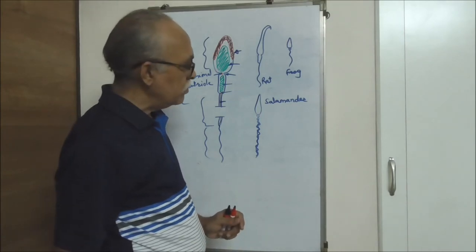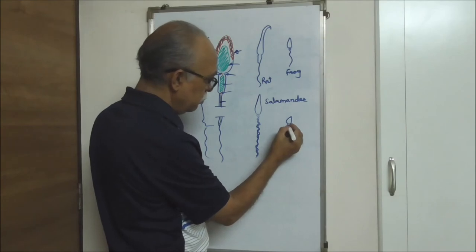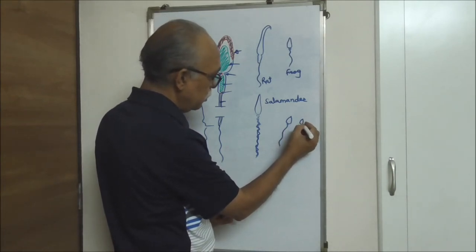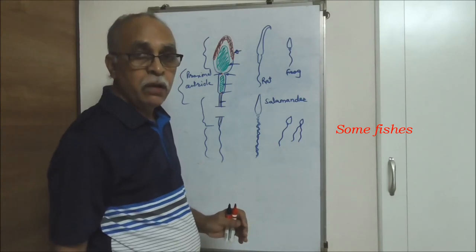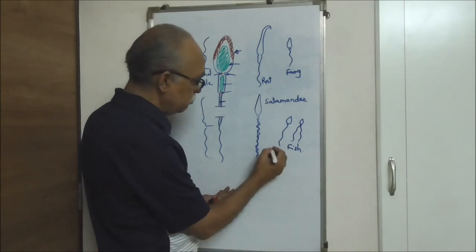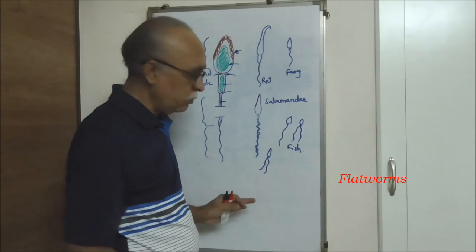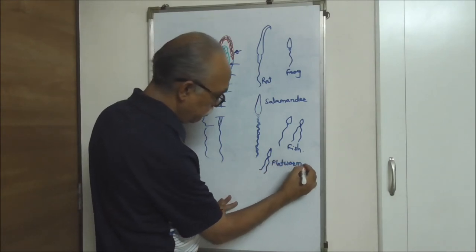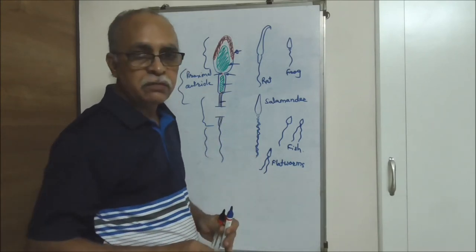Unique features are seen in some flatworms wherein there is a short head piece with an acrosomal cap, and either a single flagellum or a short mid piece with two flagella. So there is a remarkable variation in the morphological structures of sperms in the animal kingdom.